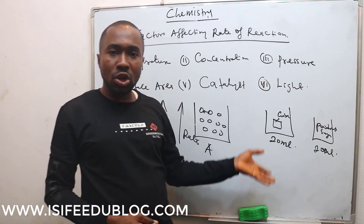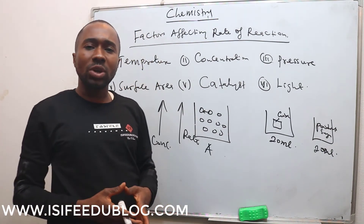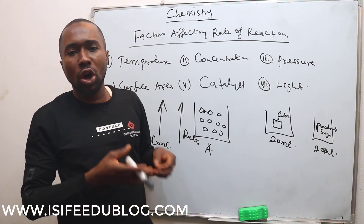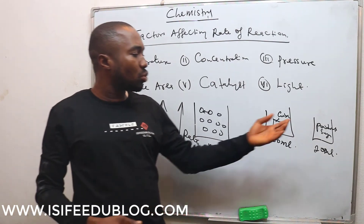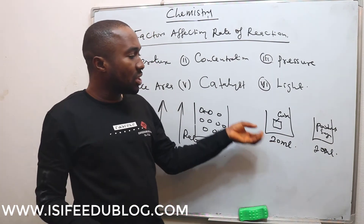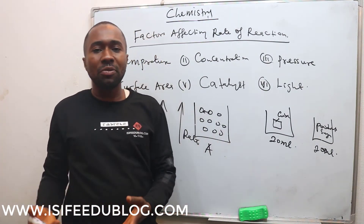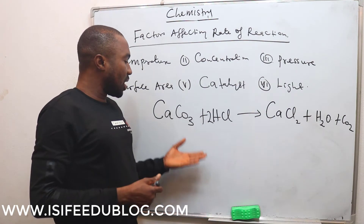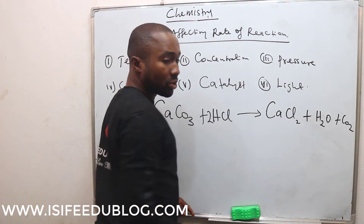Another example is the reaction between calcium carbonate (limestone) and HCl. When calcium carbonate reacts with HCl, the reaction can either be fast or slow depending on the nature of the calcium carbonate. When we have powdered calcium carbonate (limestone), the reaction with HCl will be fast. But when the limestone is in lumps, the reaction will be slow. The reason is because the lump of limestone doesn't have as much surface area as the powdered limestone. So the nature of the calcium carbonate plays an important role in the rate of the reaction.